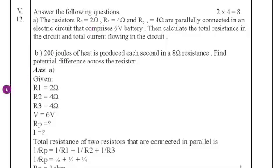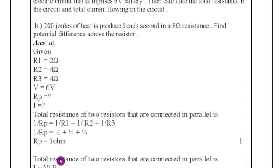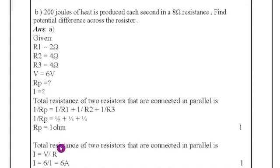R1 = 2 ohm, R2 = 4 ohm, R3 = 4 ohm, and voltage = 6 volts. For parallel connection: 1/Rp = 1/R1 + 1/R2 + 1/R3. So 1/Rp = 1/2 + 1/4 + 1/4. Taking LCM: (2 + 1 + 1)/4 = 4/4 = 1. Therefore total resistance Rp = 1 ohm. Using I = V/R: I = 6/1 = 6 amps. So the answers are: total current = 6 amps and total resistance = 1 ohm.